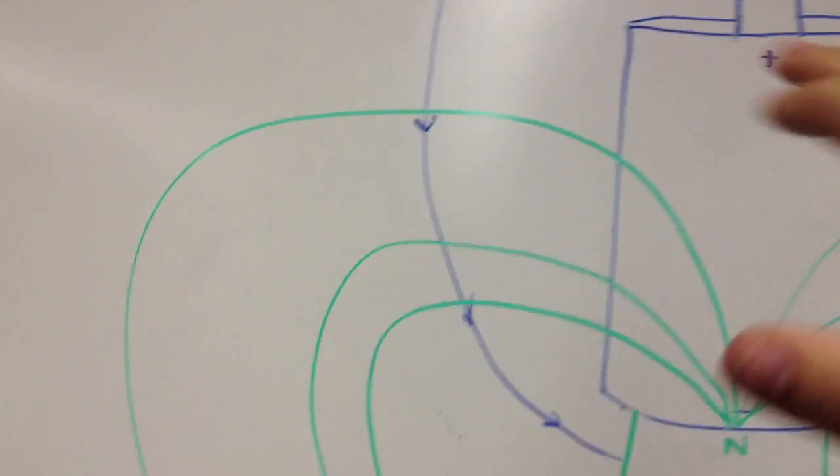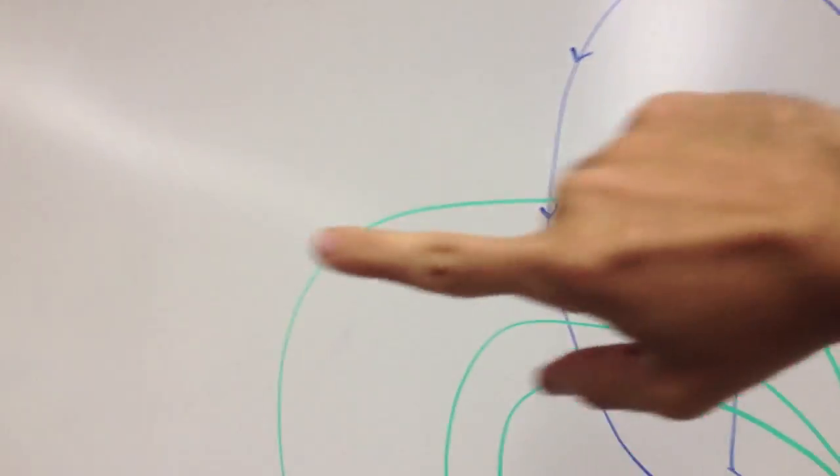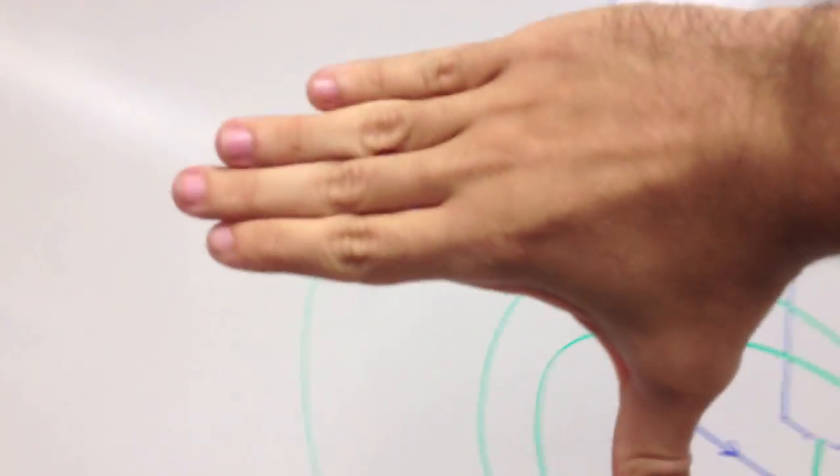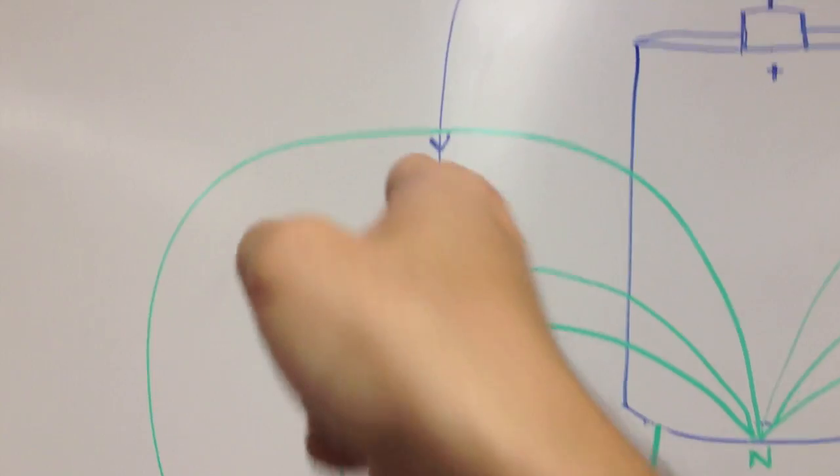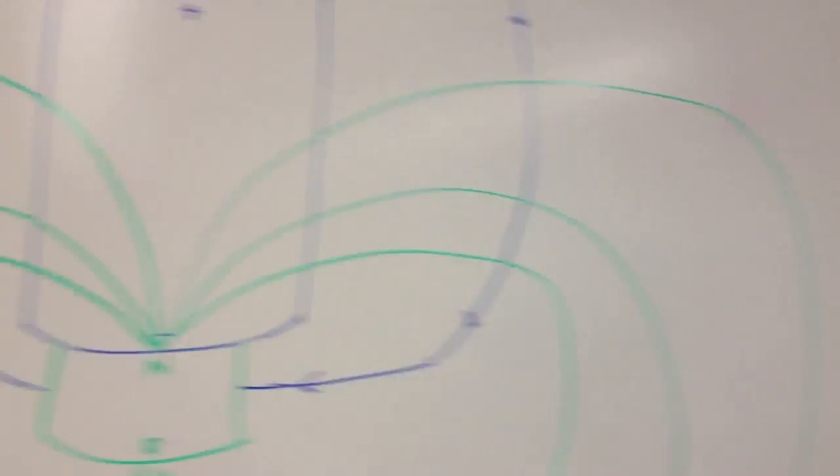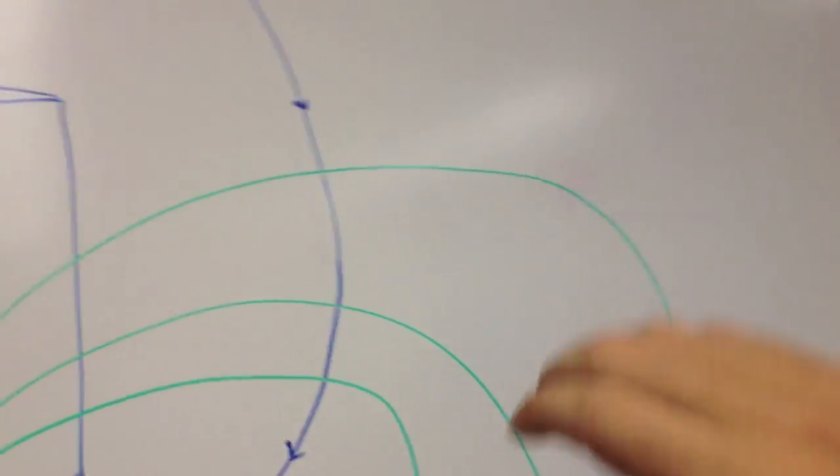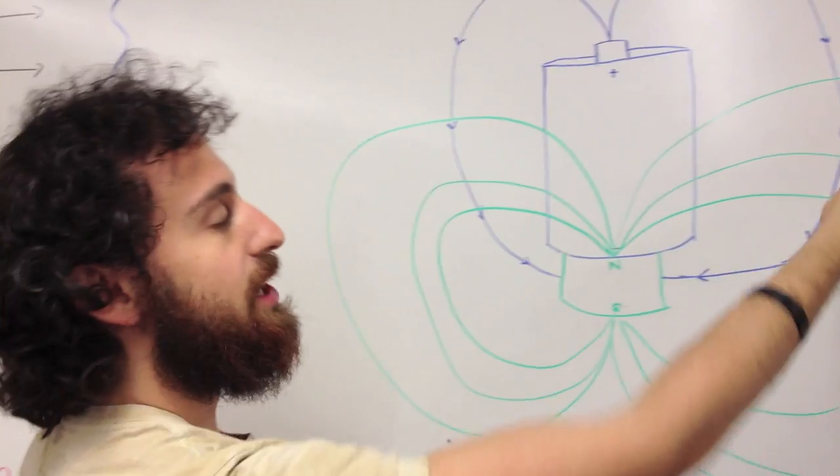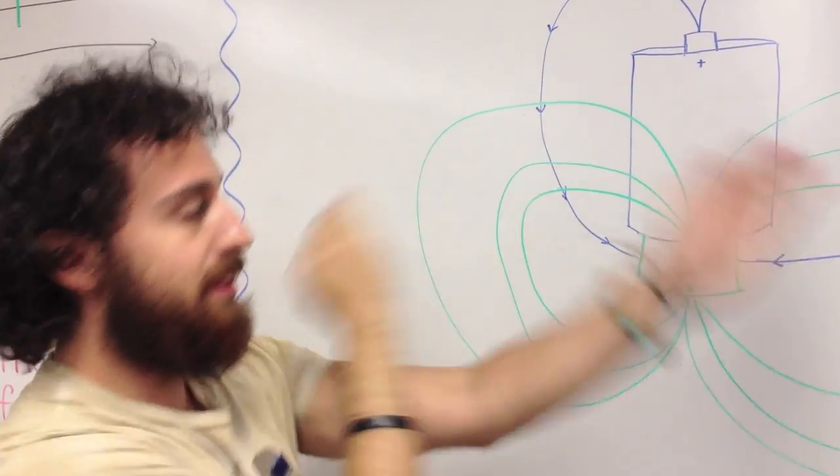So if you use the right-hand rule, those are the magnetic lines and the current's going downward, then the direction of the force is that way into the board, and on the other side it's the opposite. There's a net torque coming this way and going that way, and the wire spins.